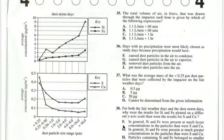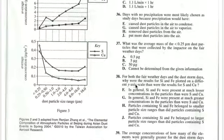Because sulfur and copper are way below 0.5. So G is true for both the dust storm days and for the fair weather days. So the answer is G.